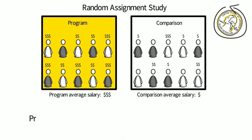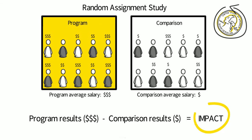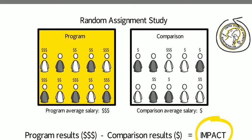The different results of these groups are what researchers call the impact of the program. In this example, it shows that the program increased people's likelihood of getting a good-paying job.